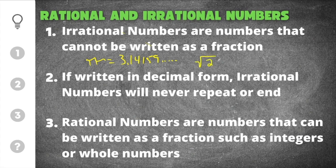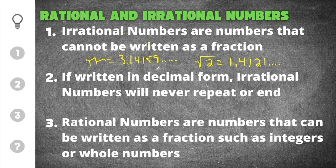So a good example would be a square root of 2. This would be 1.4121 and it would go on forever and it would never repeat. So both of these would be examples of irrational numbers that you could not write as a fraction. It's not possible to write them as a fraction.